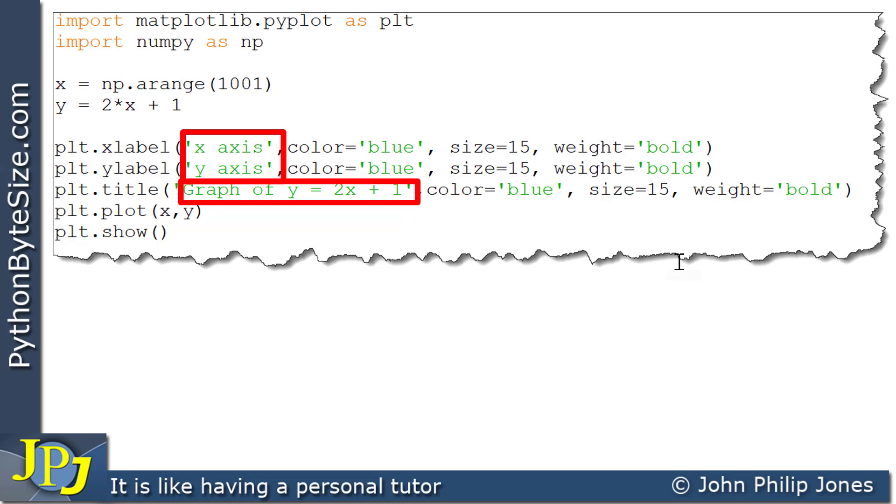I've also done the following. You see, I've decided I want to set them all to the color blue. I want to set their size to 15. And I want to set their weight, the weight of the text that's shown on the graph, to be bold.